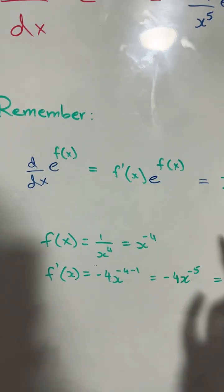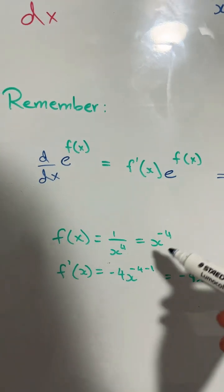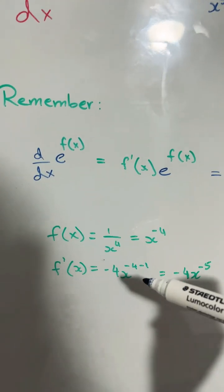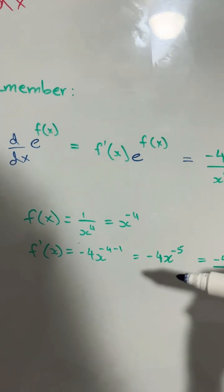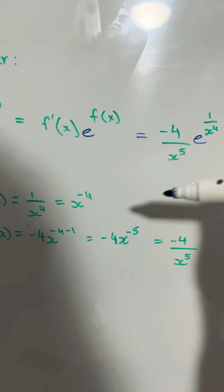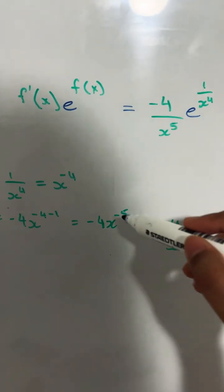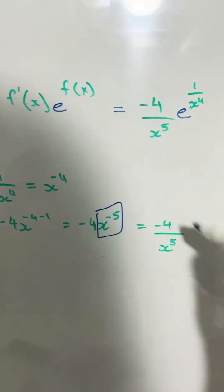Now if you derive this using the power rule we need to do negative 4 times x to the power of negative 4 minus 1, which becomes negative 4 times x to the power of negative 5. Now again we can make that negative 5 a positive 5 by bringing this whole thing to the denominator.